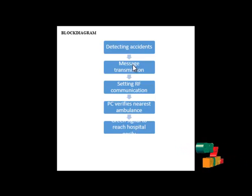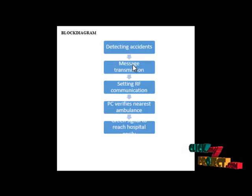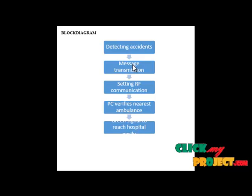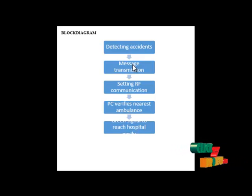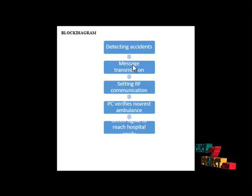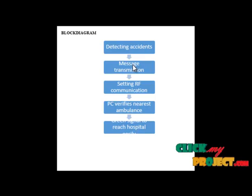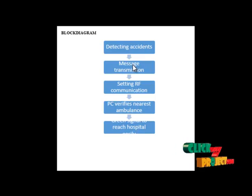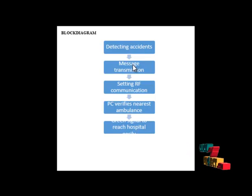Each embedded system is controlled by its own microcontroller and has specific characteristics. Each microcontroller contains the following: CPU (Central Processing Unit), RAM (Random Access Memory), ROM (Read-Only Memory), EEPROM (Electrically Erasable Programmable Read-Only Memory), input/output lines, and timers.